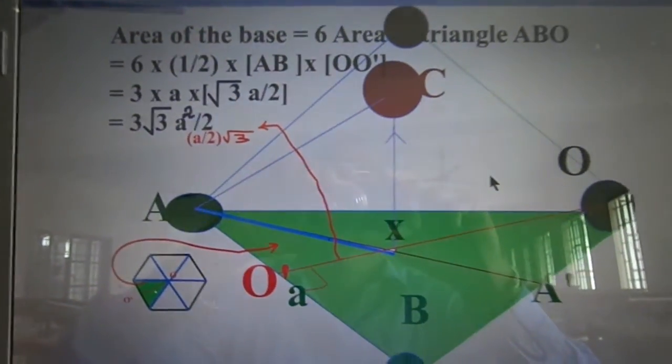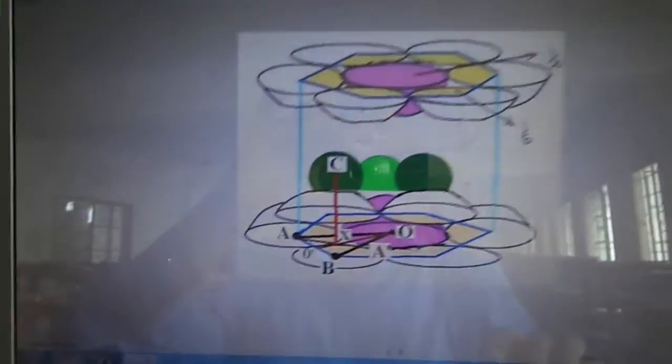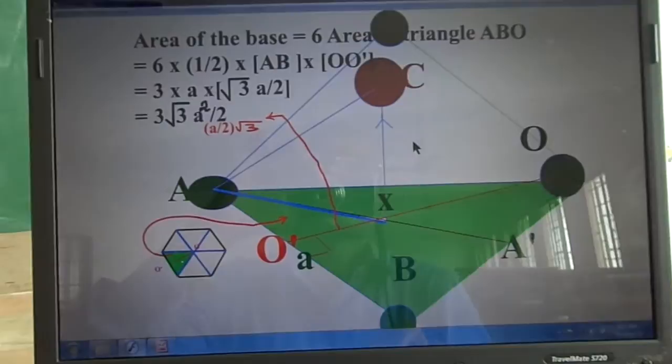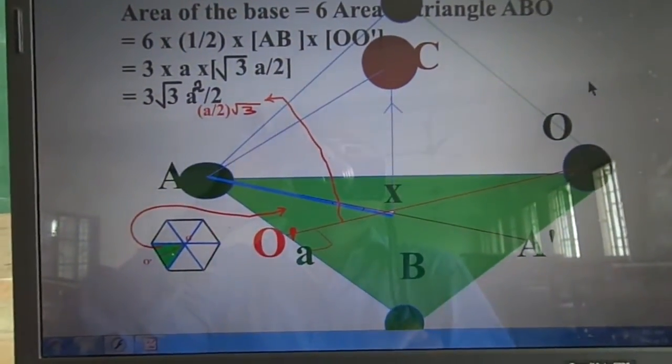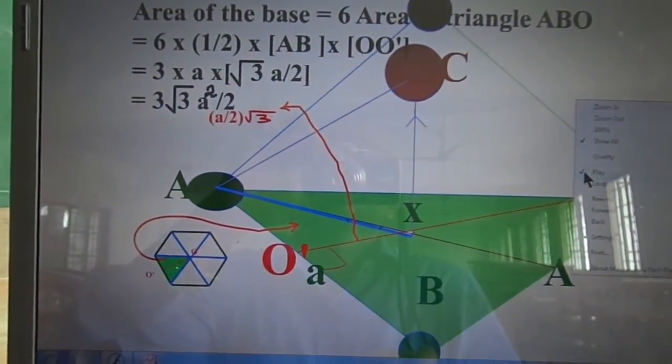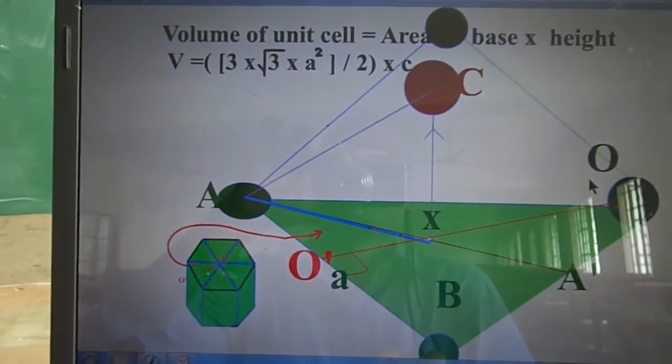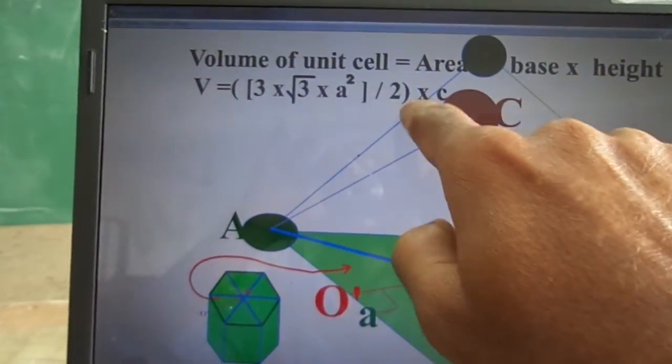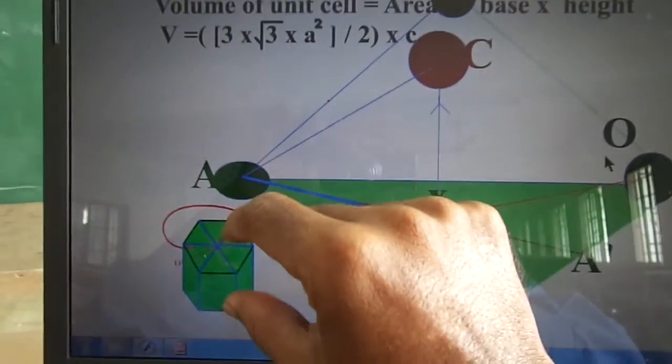This is to be multiplied with the height of the hexagonal cell. Base area we have found, that is multiplied with the height C. Entire height of the unit cell, hexagonal cell is C.